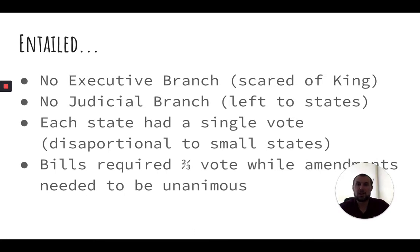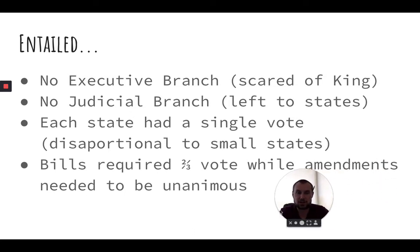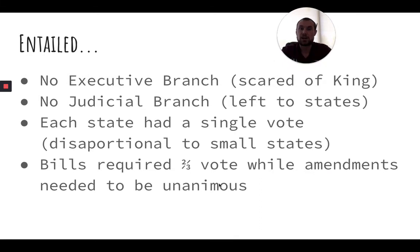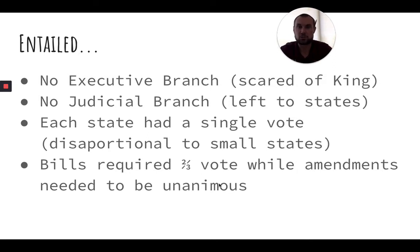They could not get anything done because bills required a two-thirds vote, and amendments to the Articles of Confederation had to be unanimous — meaning every single state had to agree. And if we know anything about states, not every state is going to agree.